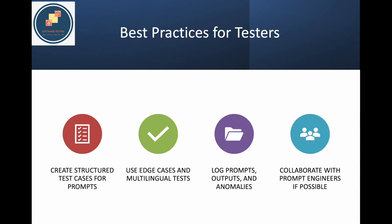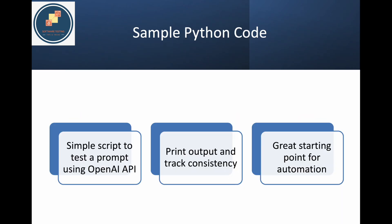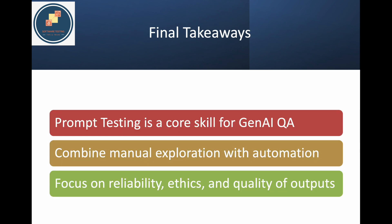Collaborate with the prompt engineer and discuss the results with them. As I showed, you can hit the API and get the response, then compare it across different tools. For the final takeaways: prompt testing is a core skill for Generative AI QA. What we were doing as exploratory testing in manual testing is essentially what prompt testing is for AI. You should combine manual exploration with automation — define a set of prompts, automate them, and once those pass, start your manual testing.